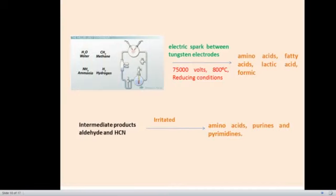In summary, they exposed a mixture of water, methane, ammonia, and nitrogen under reducing conditions to approximately 800 degrees Celsius, which resulted in the formation of amino acids, fatty acids, lactic acids, and formic acids. The intermediate products, when exposed to high temperature, again resulted in the formation of amino acids, purines, and pyrimidines.